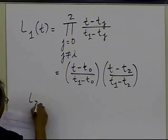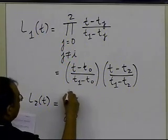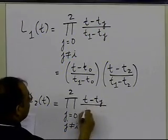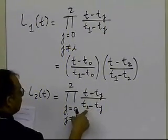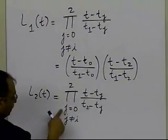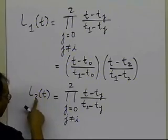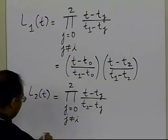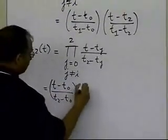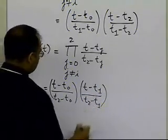Similarly, L2(t) is the product from j=0 to 2, j≠2, of (t − t_j)/(t2 − t_j). j takes values 0, 1, and 2, but j=2 is skipped because j≠i. So we write terms for j=0 and j=1: L2(t) = [(t − t0)(t − t1)] / [(t2 − t0)(t2 − t1)].